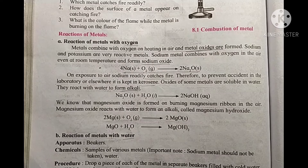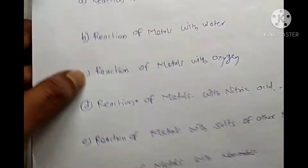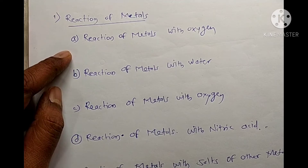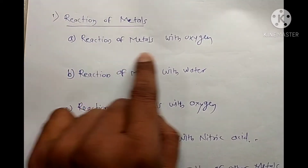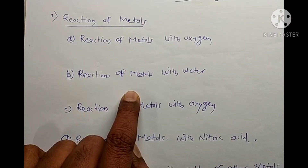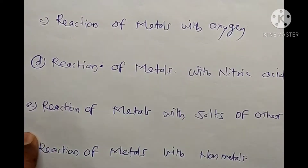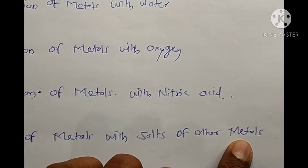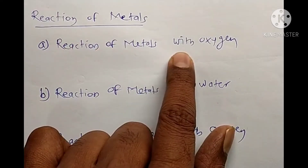In science, chapter number eight: metallurgy. In this chapter, the topic is reactions of metals. We are going to learn about the various reactions of metals — reaction of metals with oxygen, reaction of metals with water, reaction of metals with nitric acid, reaction of metals with salts of other metals, and reaction of metals with non-metals.